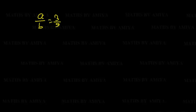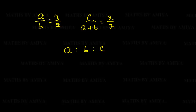Consider: A/B = 3/2 and C/(A+B) = 2/7. We need to simplify the ratio A:B:C. In the first ratio we have A and B; in the second ratio we have A, B, and C. So A and B are both common. We find the relation A+B from the first ratio: A takes 3, B takes 2, so A+B = 5.